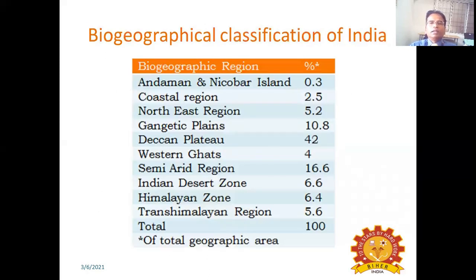Regarding the biogeographical classification of India: Andaman and Nicobar Islands contribute 0.3%, the coastal region 2.5%, the Northeast region 5.2%, the Gangetic plains 10.8%, and the Western Ghats 4%, and so on across other regions.